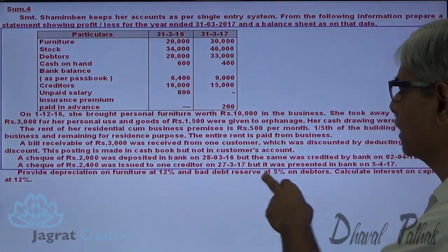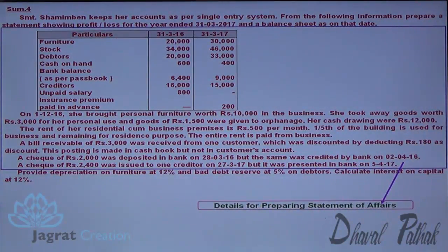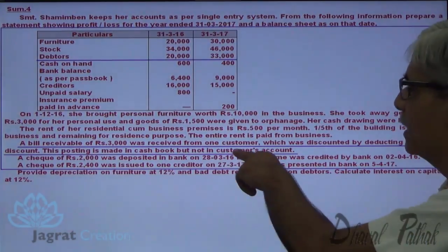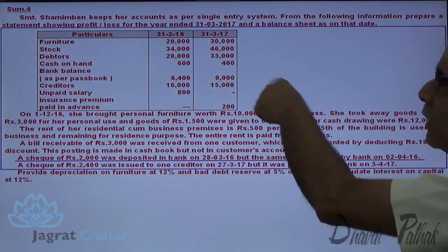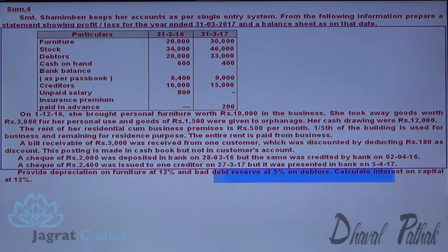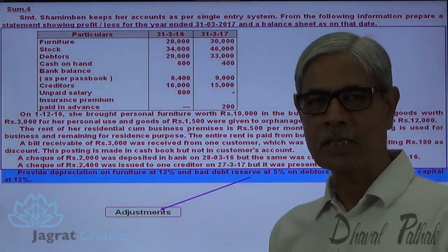Provide depreciation on furniture. All this information will be considered for the purpose of preparing the statement of affairs. After preparing the statement of affairs, I will find out the opening capital and closing capital. By capital comparison, taking into consideration the drawings and additional capital, I will find out the gross profit. From gross profit I will give the effect of the adjustments. Now, after explaining the sum in this fashion, let me start preparation of the opening statement of affairs and the closing statement of affairs.